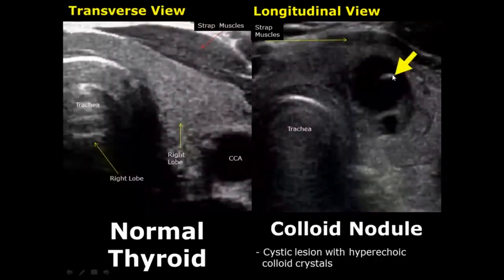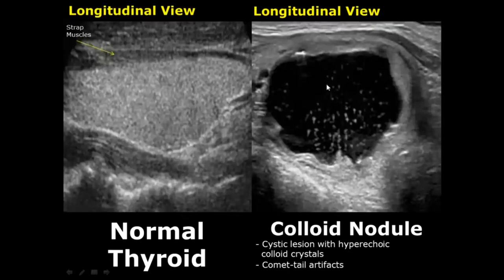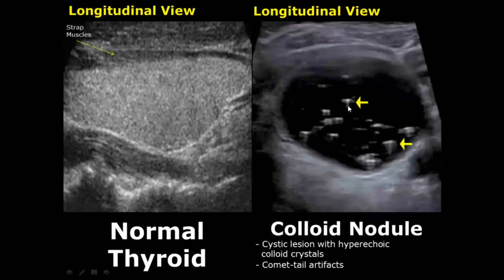A colloid nodule will have a cystic lesion filled with echogenic colloid crystals. Here you can see only one crystal in this image — it is hyperechoic. Here is another image of a colloid nodule having multiple colloid crystals that are hyperechoic, and they can also have comet tail artifacts. In this image you can see the comet tail artifacts more clearly. Usually these types of appearances are benign.